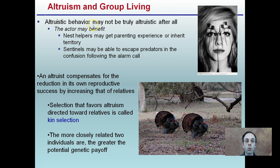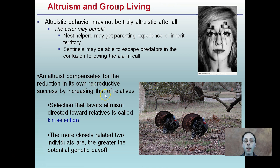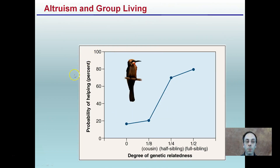Altruistic behavior may not truly be altruistic after all — the actor may receive some benefit. Nest helpers may gain parenting experience or inherit territory. Sentinels may be able to escape predators in the confusion following an alarm call, as with meerkats sounding the alarm and escaping among the confusion. An altruist compensates for a reduction in its own reproductive success by increasing that of its relatives. Selection that favors altruism directed toward relatives is called kin selection — kin referring to family. The more closely related two individuals are, the greater the potential genetic payoff.